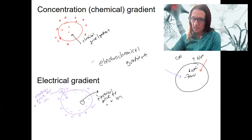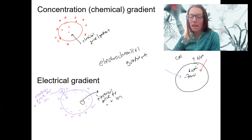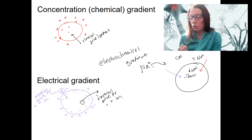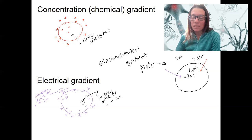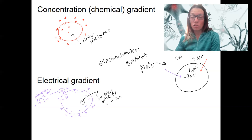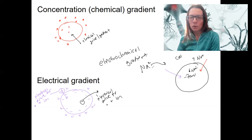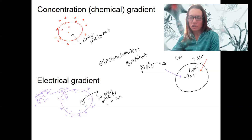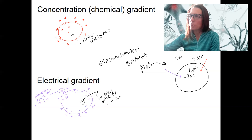Sometimes this is easy to determine because the electrical and the chemical gradient are in the same direction. For sodium in this case, the electrochemical gradient is simple to determine — it is the same direction for both. There are other times when the electrical and the chemical gradients act in opposition, and there are formulas you can use to calculate the specifics of driving forces for different ions in different scenarios — it's called the Nernst equation. We will not be doing that. For potassium, I'll tell you the factors that contribute to that gradient and where those are equal and opposite gradients, and when they're not.